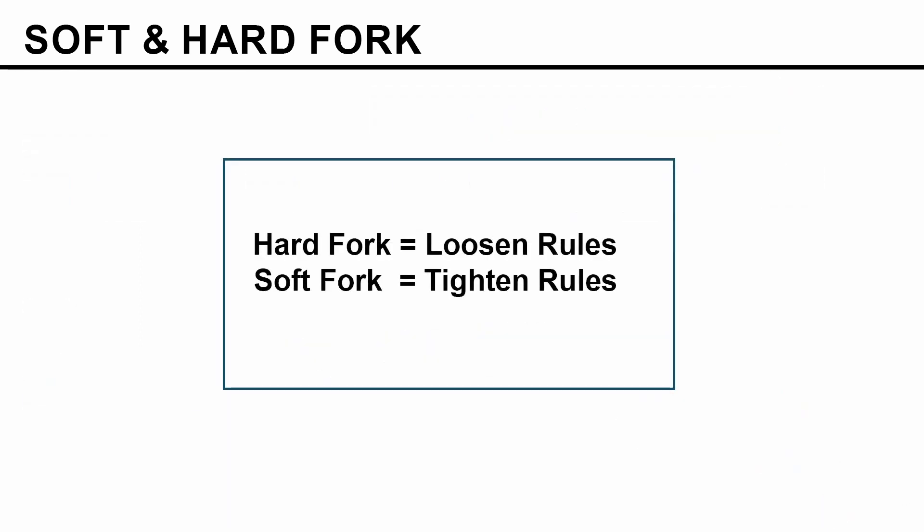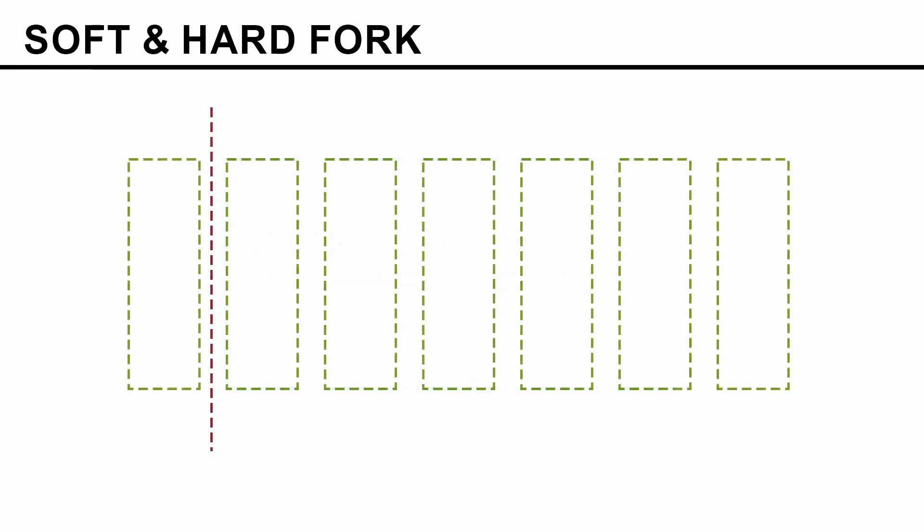This is the rule of thumb: the hard fork loosens the rules, whereas the soft fork tightens the rules. Let's see an example. The dotted rectangle represents the placeholder and the dotted red line represents when the fork occurred.